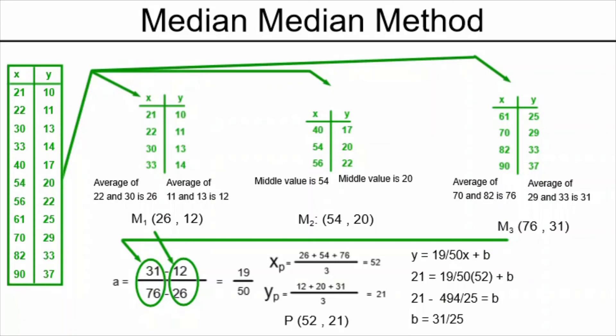We plug that point and the slope we found, the 19 over 50, into the y equals ax plus b form. And we solve for b. Our y-intercept b will be 31 over 25.